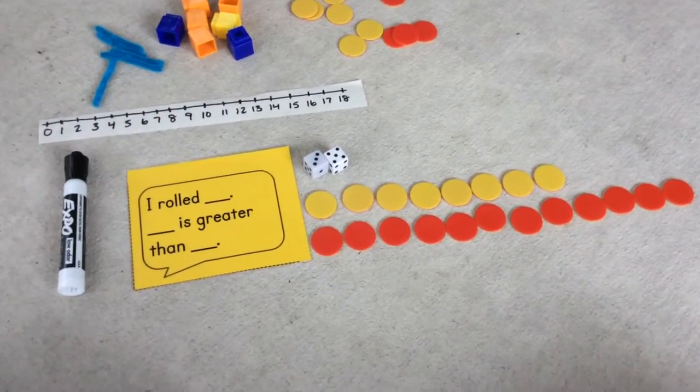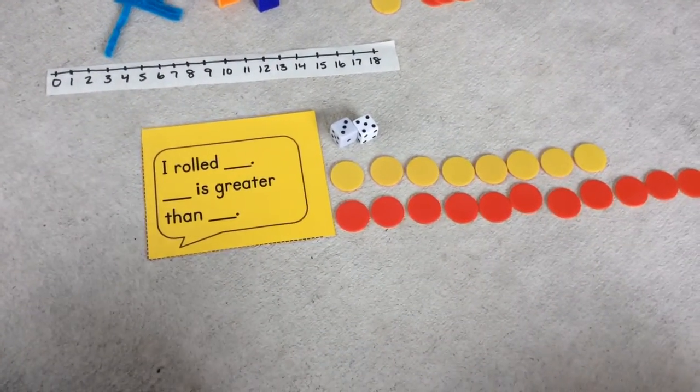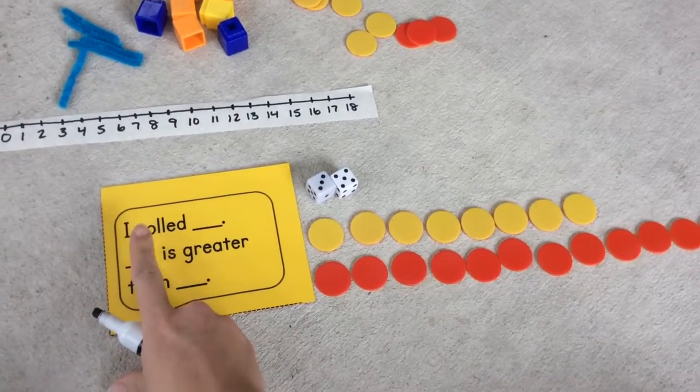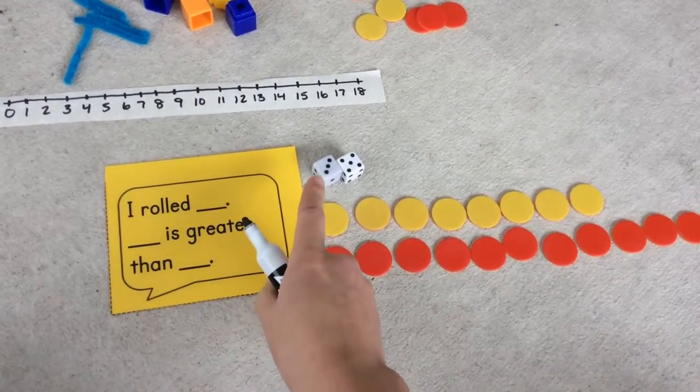Now I need to record that on my paper. I'm going to take my marker and it says, I rolled. Well, I rolled eight.